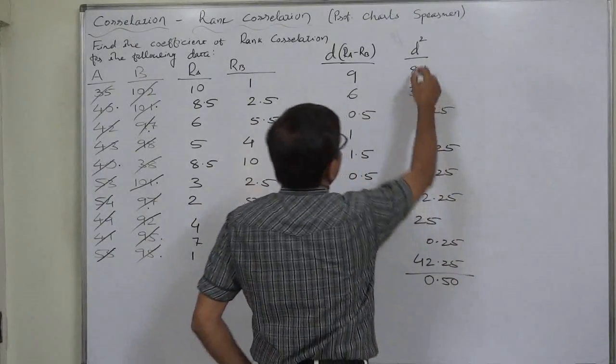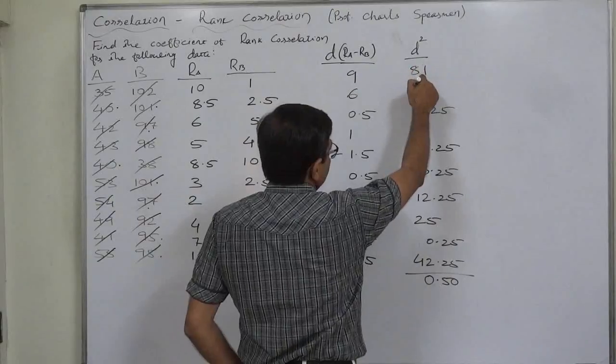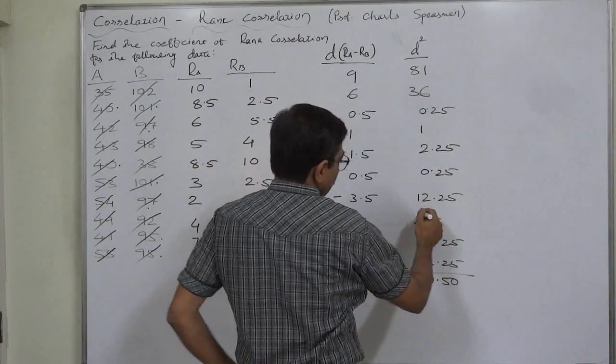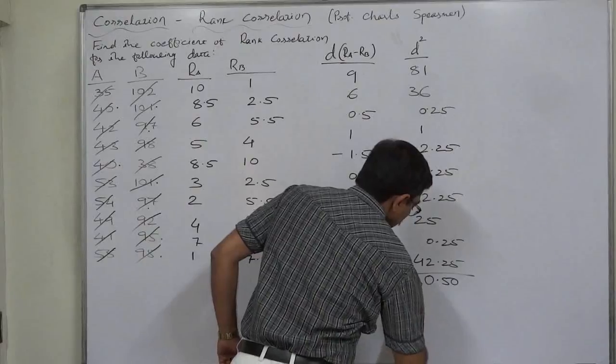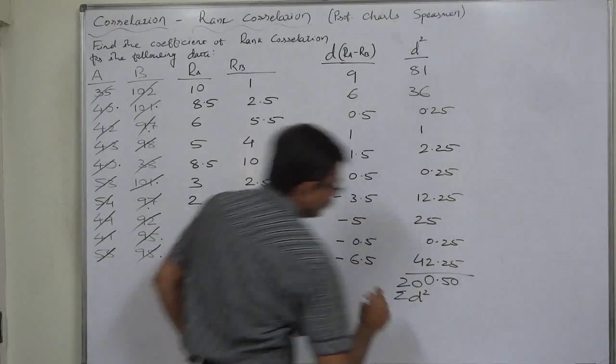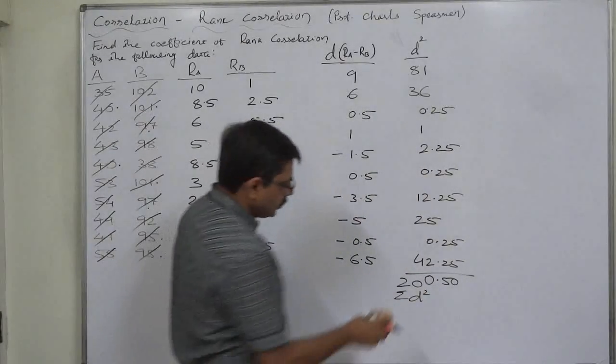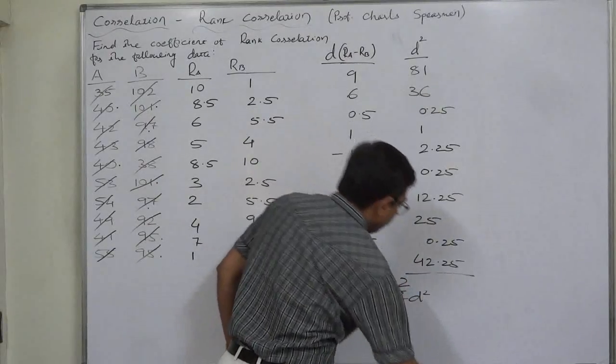2 plus 8, 10, 13, 14, 16 and 20. So sigma D square comes to 200.5, 200.5.